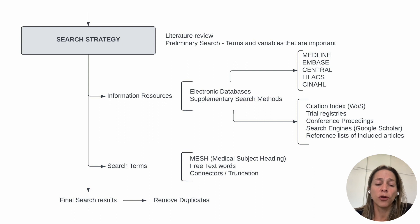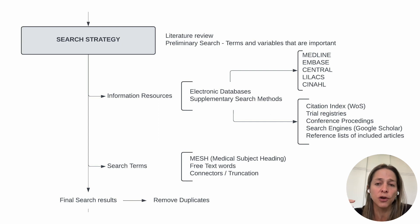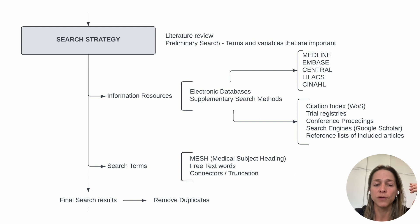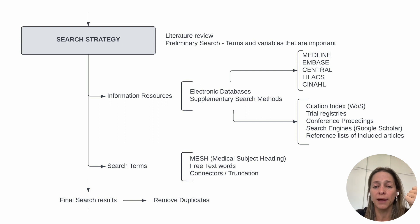Now that you have that, you're going to develop your search strategy. You need to do some literature review and a preliminary search that will give you information on the different terms and possible variations of your population, intervention, or settings to have an overall knowledge of the topic. After that, you need to decide where you're going to look for the studies. There are usually two main sources of information — one is electronic databases.